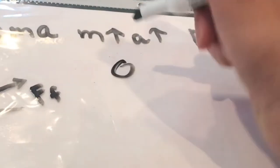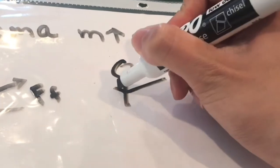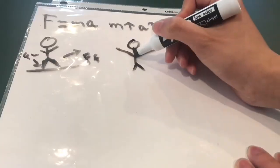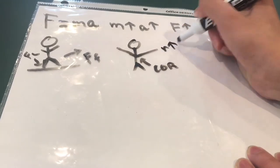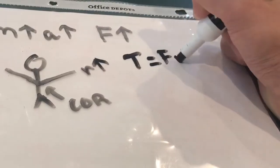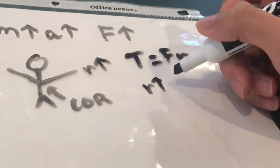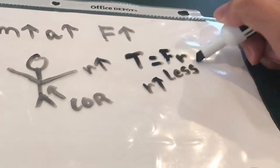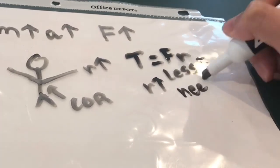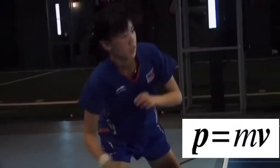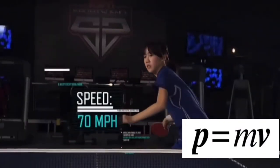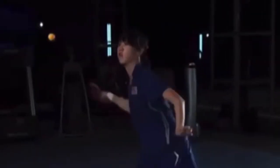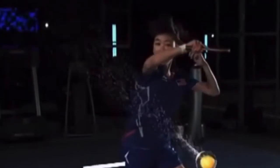Additionally, table tennis players must have longer arms to allow for greater torque. Since the center of rotation is the center of the body, a longer arm means a larger radius. Torque is equal to force times radius, so if you have a greater radius, a smaller force is required to reach the same amount of torque as someone with a smaller radius. Momentum is mass times velocity, so if the velocity of the arm is large, which happens with a stronger arm, then the momentum that is transferred to the ball will be greater.